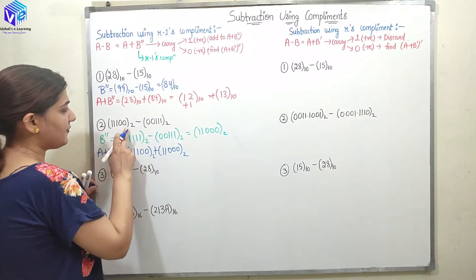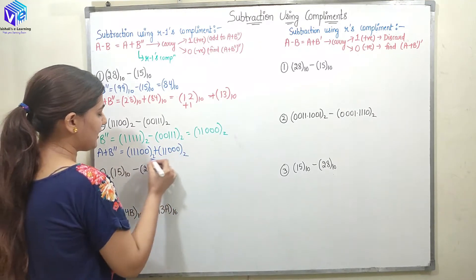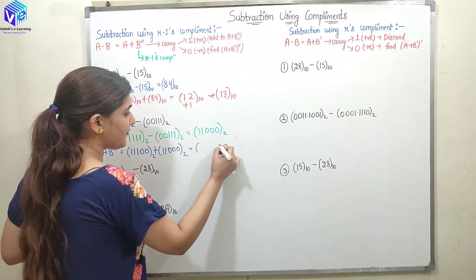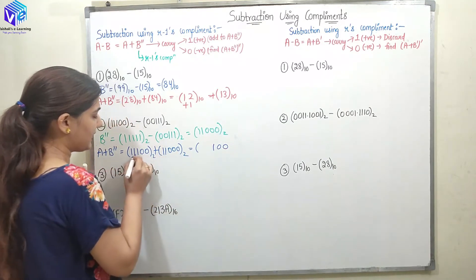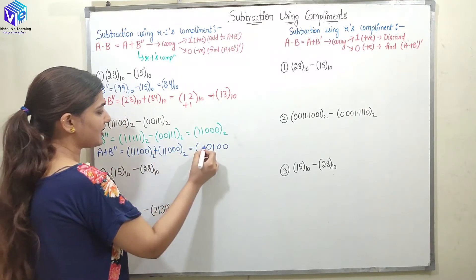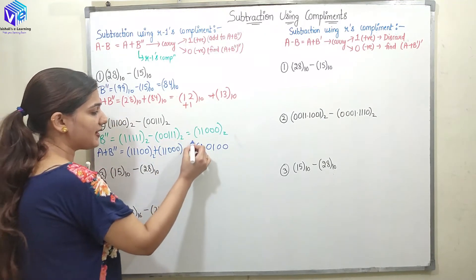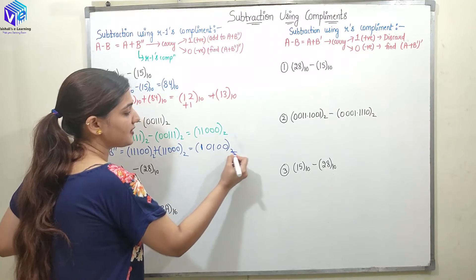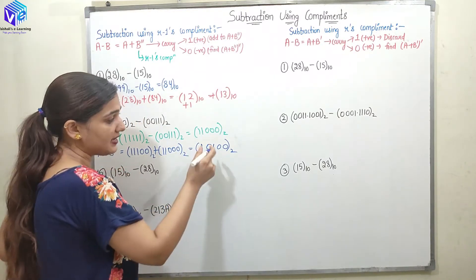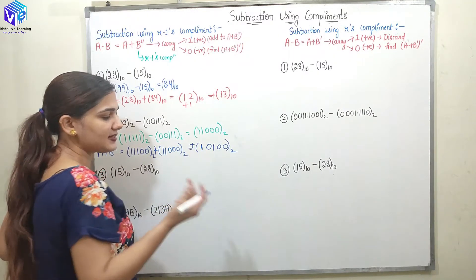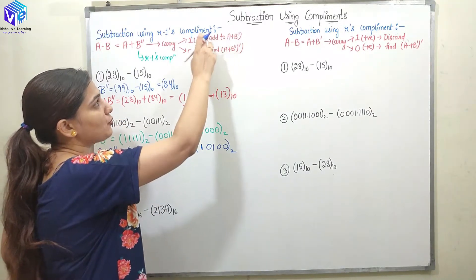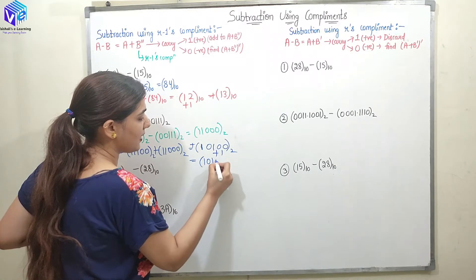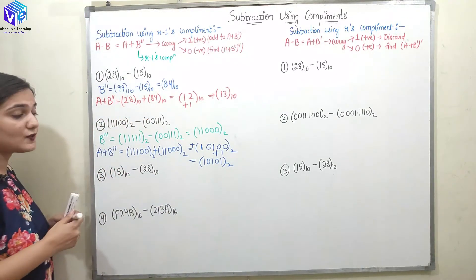Adding 11100 plus 11000: 0 plus 0 is 0, 1 plus 0 is 1, 1 plus 1 gives 0 with carry 1, and then 1 plus 1 plus 1 gives 1 with carry 1. We have 1 as the carry, which means the output is positive. Now I have to add the carry to A plus B double dash. The answer is 10101 base 2, and this is my final answer.